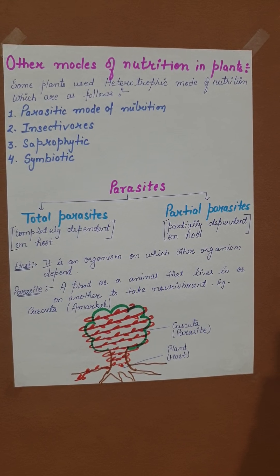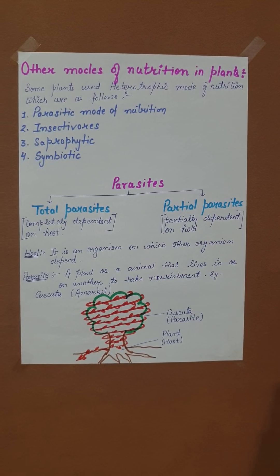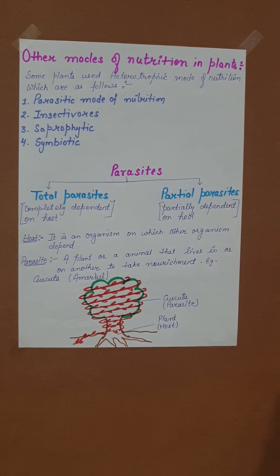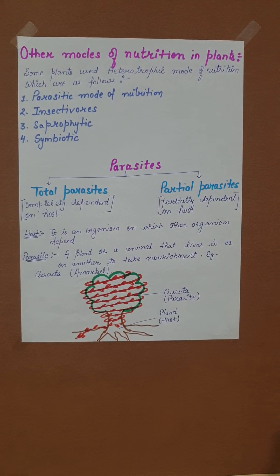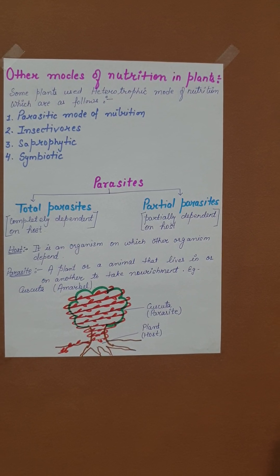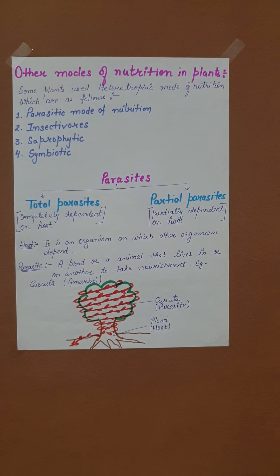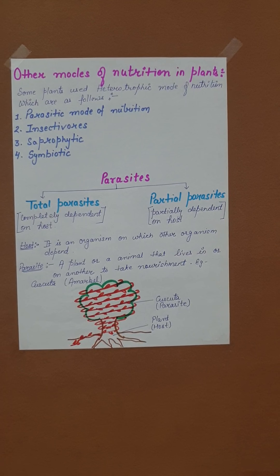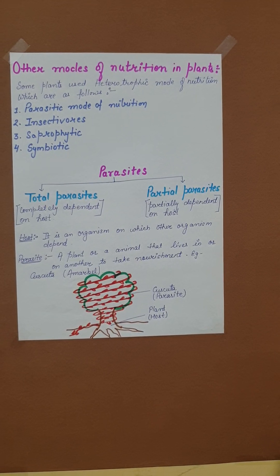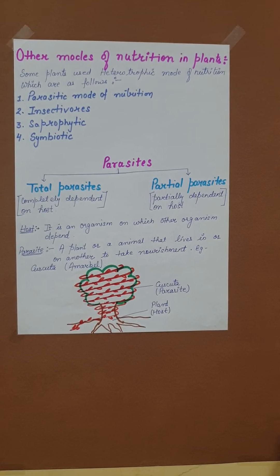In parasitic mode of nutrition, plants are dependent on other plants or animals for food and shelter. As per this mode of nutrition, parasites are of two types: total parasites and partial parasites.